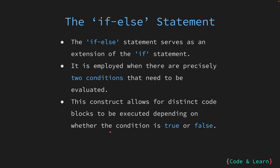In the if else construct, there are two separate code blocks associated with it. The first code block associated with the if keyword is executed when the condition is true. The second code block associated with the else keyword is executed if the condition is false. So just like in real life where we say: if this happened, do this, otherwise do that. Let's look at an example now.